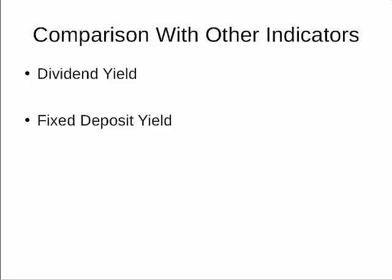The dividend yield is the percentage return on your investment coming from dividends. When a company makes a profit, it pays some of that out to shareholders as dividends. The rest is held as retained earnings, possibly for future investment. As a shareholder, you receive the actual dividend in your account — you do not receive the earnings yield.